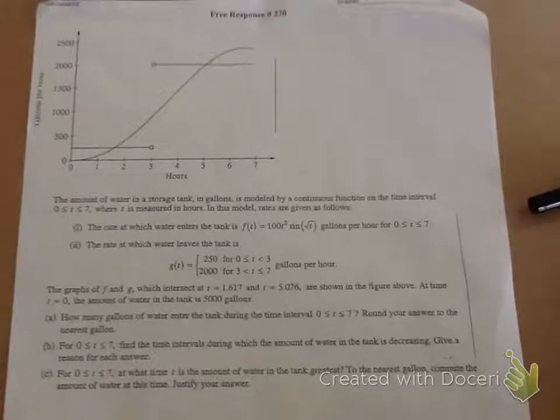Testing 1, 2, 3. This is Ashlyn Mahalan with another AP Calc video for Free Response 270, and it's a related rates problem. The question says the amount of water in a storage tank in gallons is modeled by a continuous function on the time interval from 0 to 7 hours, where T is in hours.